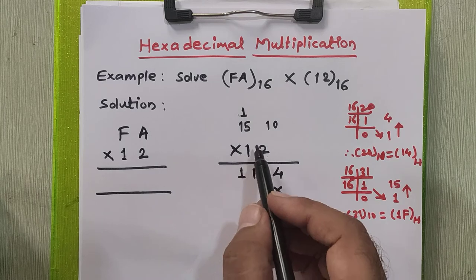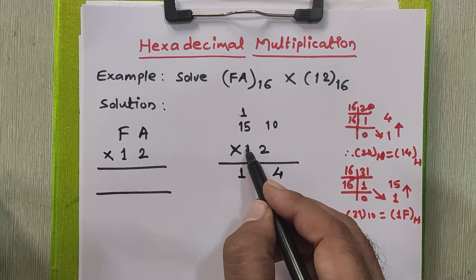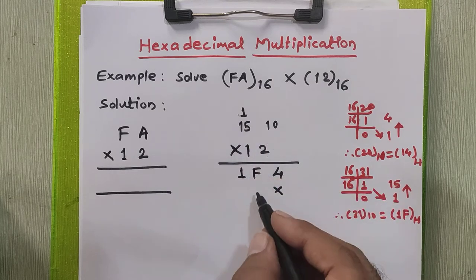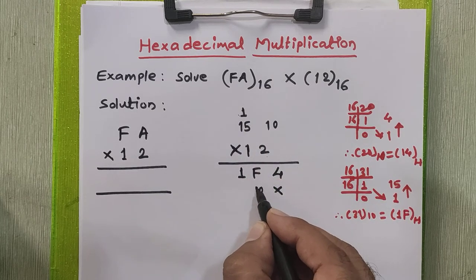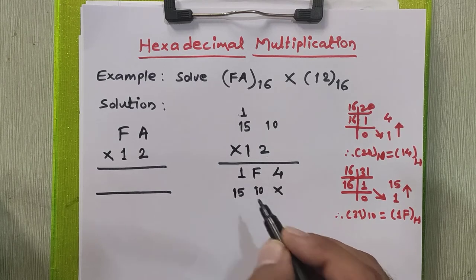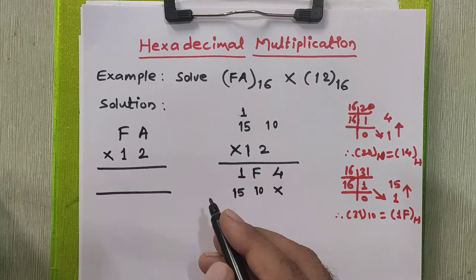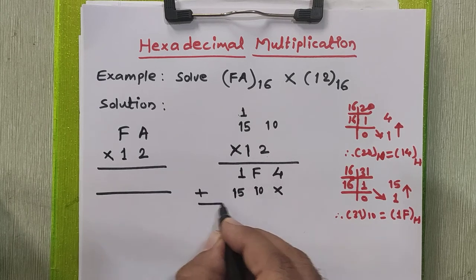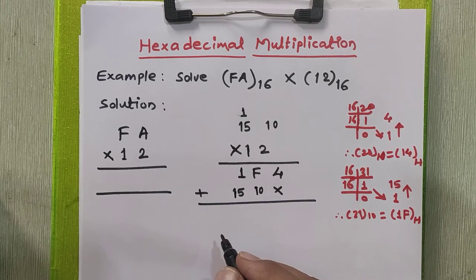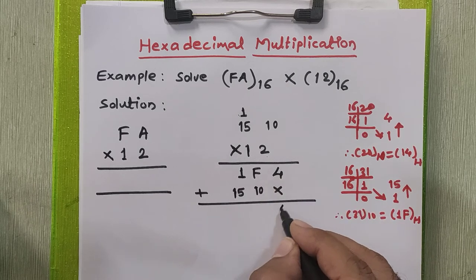Then for further multiplication to the next digit with other numbers, I will multiply now 1 with these digits. So I will get 1 into 10 is 10. 1 into 15 is 15 as it is. And we will perform addition now according to the hexadecimal addition rules that we have studied in our previous tutorial.